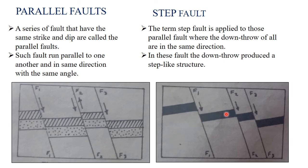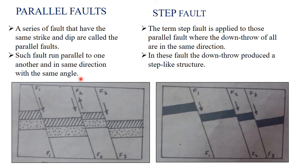The hanging wall is displaced in such a way that it shows a step-like structure or image — this type of fault is called step fault. In this fault the downthrow produces a step-like structure. Because of the appearance of the fault just like a step, this type of fault is called the step fault. The fault lines of both parallel fault and step fault are parallel to each other, but based on the step-like manner they are distinguished.